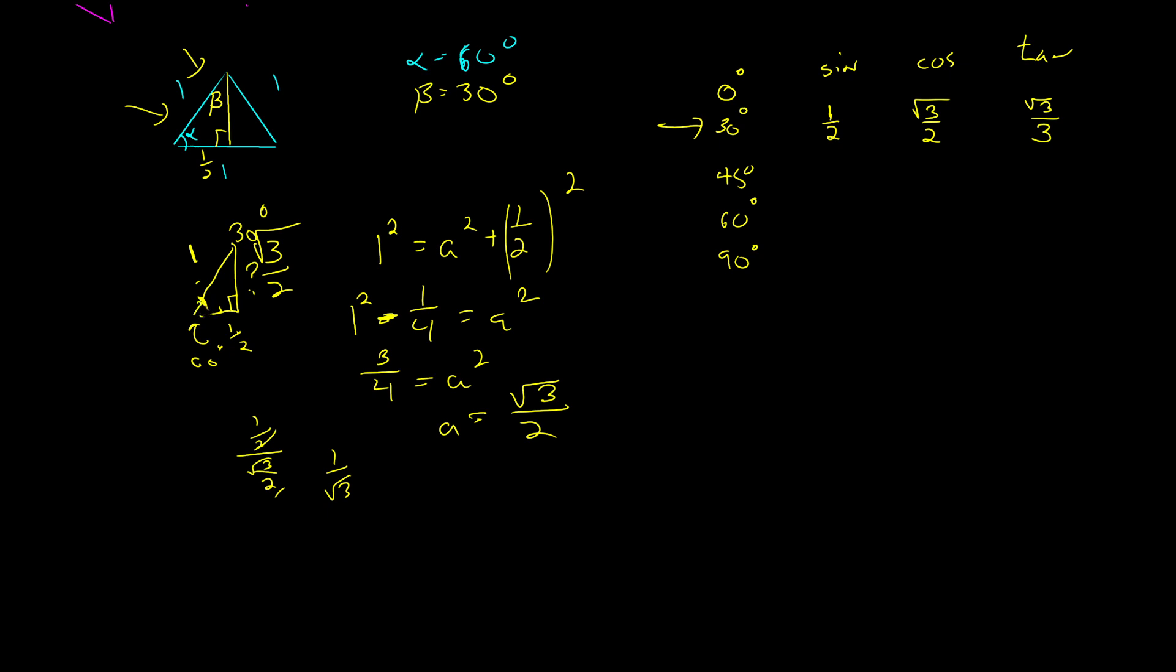Well, we can also find 60 degrees here. Sine is the opposite over the hypotenuse. So sine is root three over two. Cosine is adjacent over hypotenuse. So it's one half. And tangent is opposite root three over two over one half, or root three.